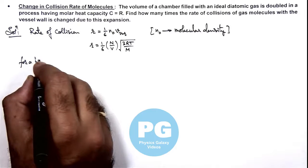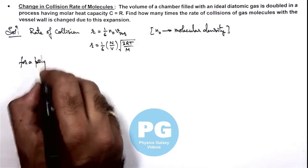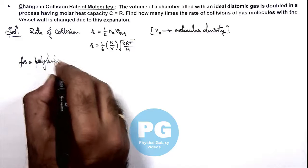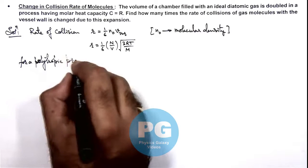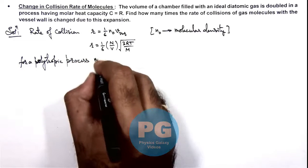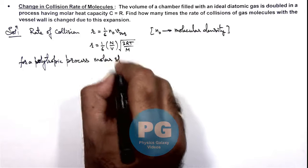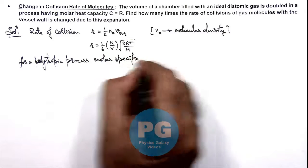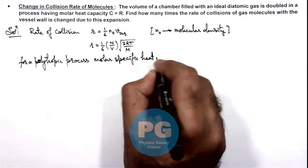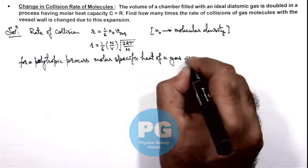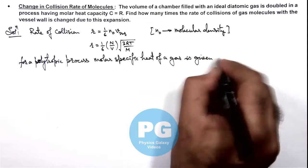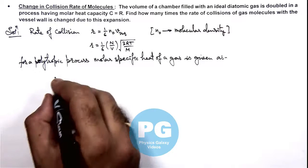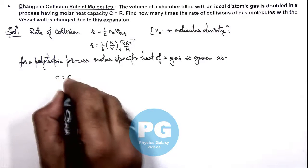Molar specific heat of a gas is given as, this we already see, instead the value of C is given as Cv